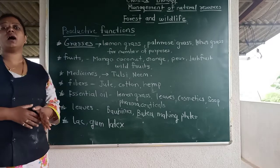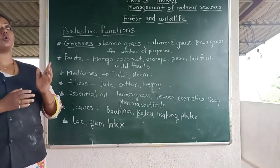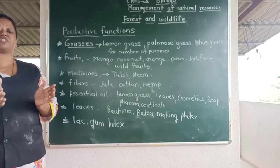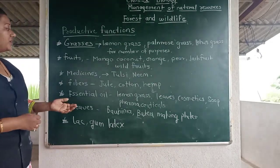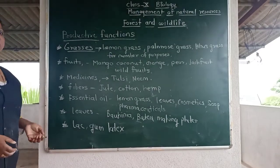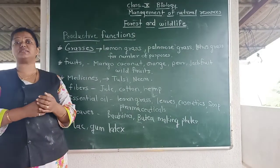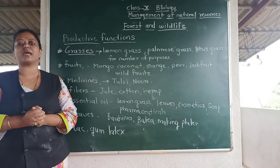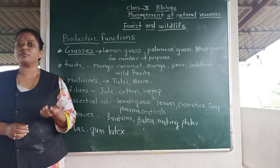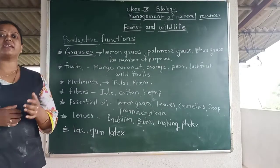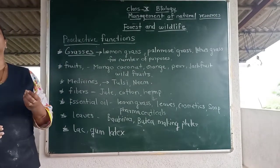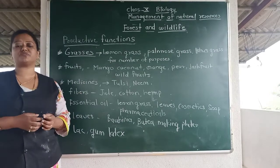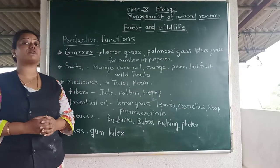Bahuniya and butiya leaves are used to make plates — in olden days, people ate food from plates made of leaves at family functions. Various kinds of lac, a resinous material, are used for decoration and making ornaments. Gum (dinka in Marathi) is used for food purposes. Latex, a milky white juice, is used in the rubber industry. Whatever products we use, the raw materials come from the forest.